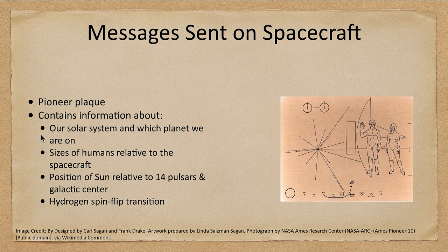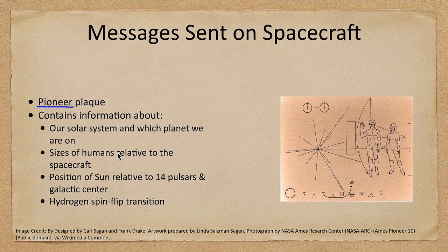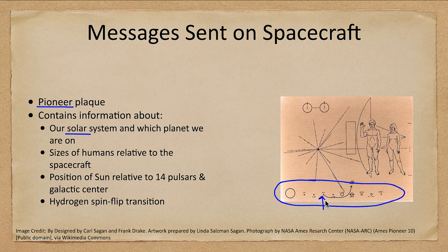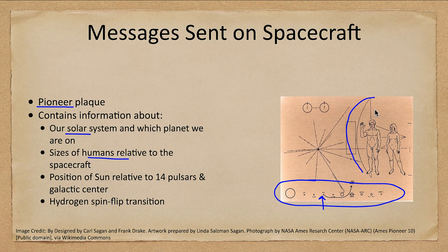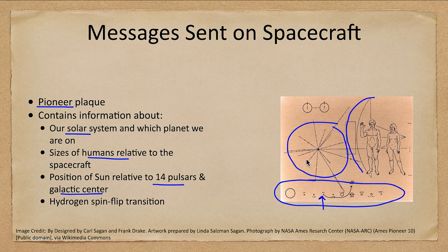How about sending messages? Well we have sent messages on spacecraft such as the Pioneer which had a plaque as is shown here which contains information about our solar system. So this is our solar system and which planet we're from. We identify the spacecraft is coming from the third planet there. The sizes of humans here relative to the spacecraft in the background, what the size of a typical human is. And this is the position of the Sun relative to 14 pulsars and the center of our galaxy. So that identifies the location of the solar system in space.